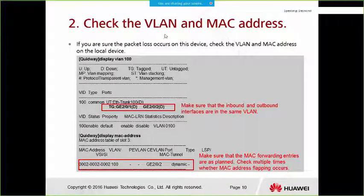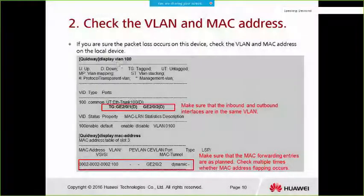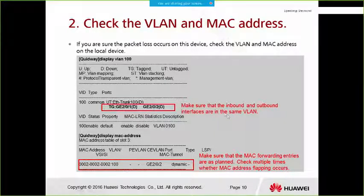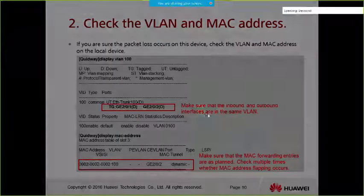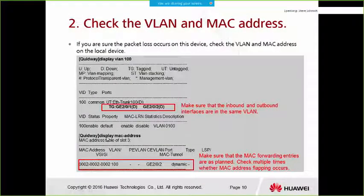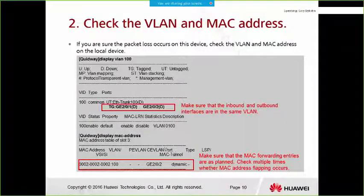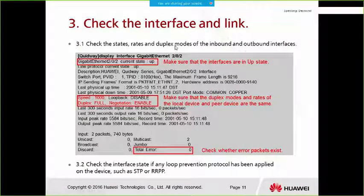Check the VLAN and MAC address on that device. For example, if this is VLAN 100, use 'display VLAN 100' to see the interfaces and make sure the inbound and outbound interfaces are in the same VLAN. Then use 'display MAC address' to verify that MAC forwarding entries are as planned and check multiple times whether MAC address flapping occurs.